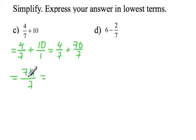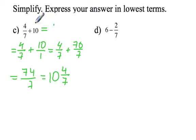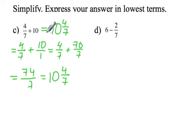7 fits into 74 fully 10 times and that leaves 4 over, so 10 and 4 sevenths. Really, we have 10 of something and we are adding 4 sevenths to it, so the final answer — you could have seen right away with no work involved — is 10 and 4 sevenths.